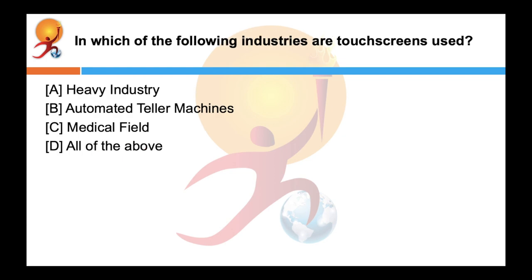In which of the following industries are touch screens used? Correct answer is D all of the above. The popularity of smart devices has increased the popularity of touch screens for both portable as well as functional electronics. These are found in medical line, heavy industries, ATMs, room automations etc.